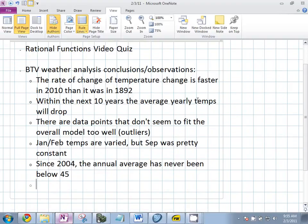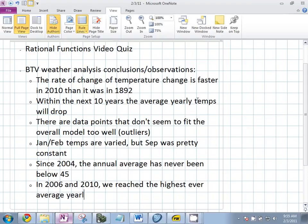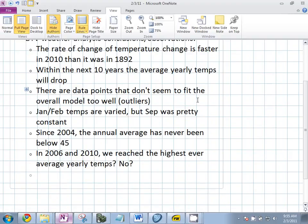In 2006 and 2010, it reached the highest ever. We reached the highest ever average yearly temps. Is that true? No. In 98, it was 48.3. In 2010, it was 48.3. So it's not actually.